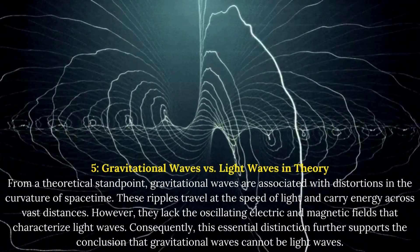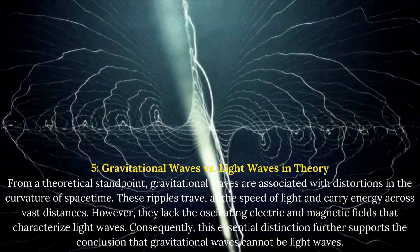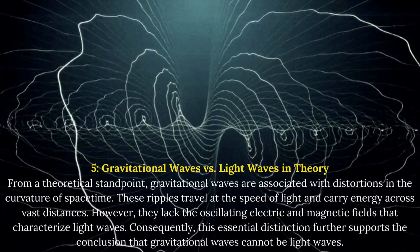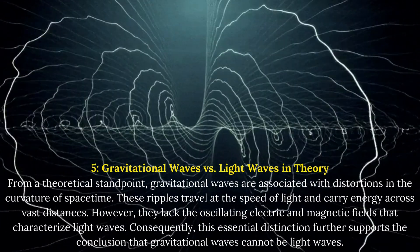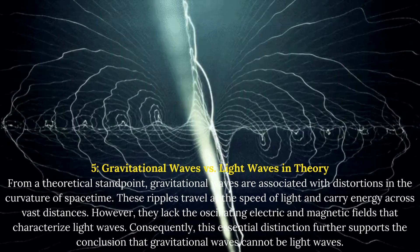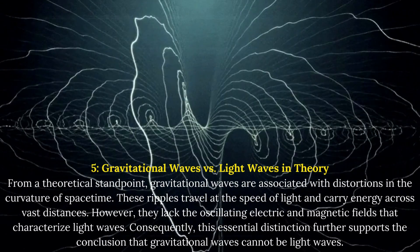Gravitational Waves Versus Light Waves In Theory. From a theoretical standpoint, gravitational waves are associated with distortions in the curvature of spacetime. These ripples travel at the speed of light and carry energy across vast distances.